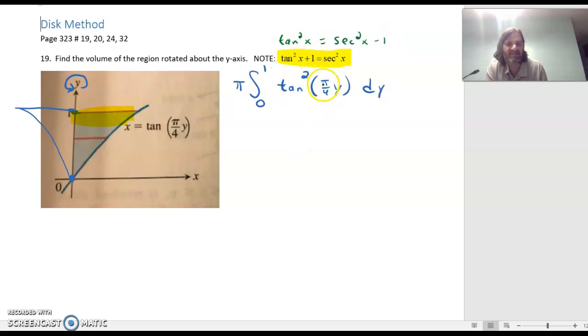We just need to keep the same angle in there, pi over 4y. We're going to rewrite this: it's going to be pi times the integral from 0 to 1 of secant squared of pi over 4y minus 1 dy. That makes it a lot easier because we know how to integrate secant squared.